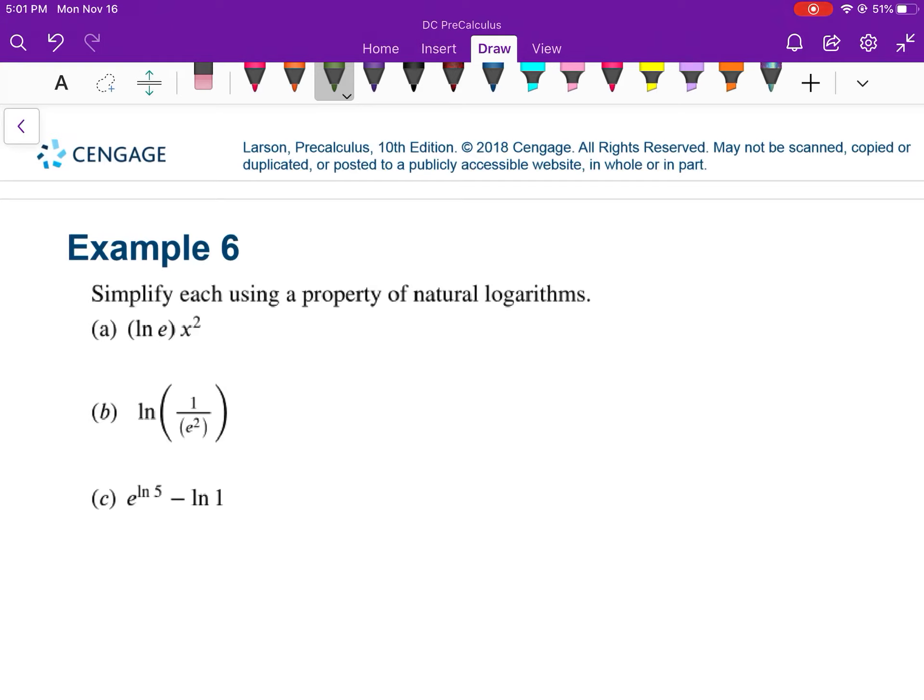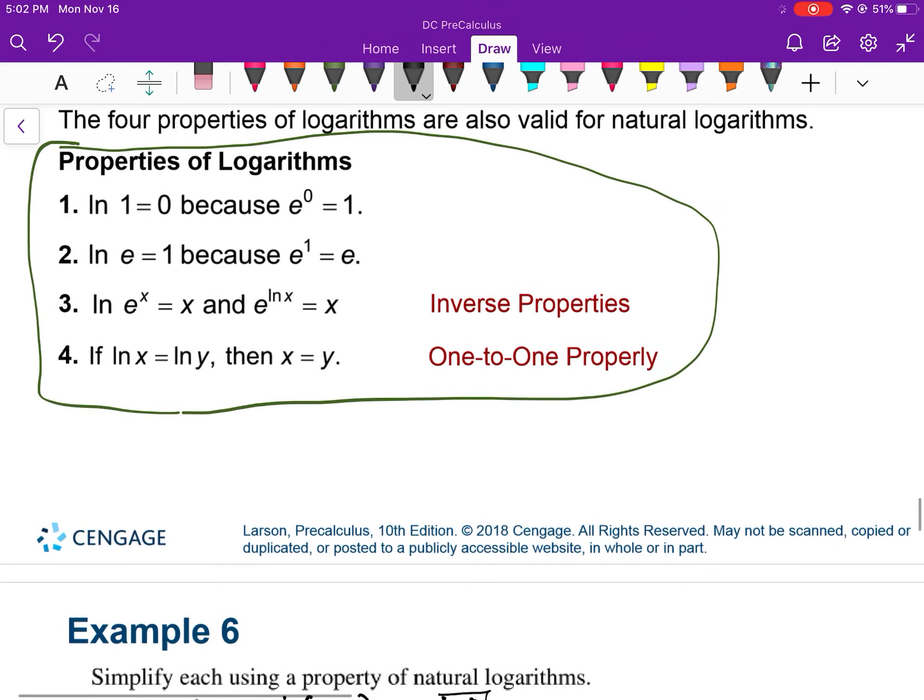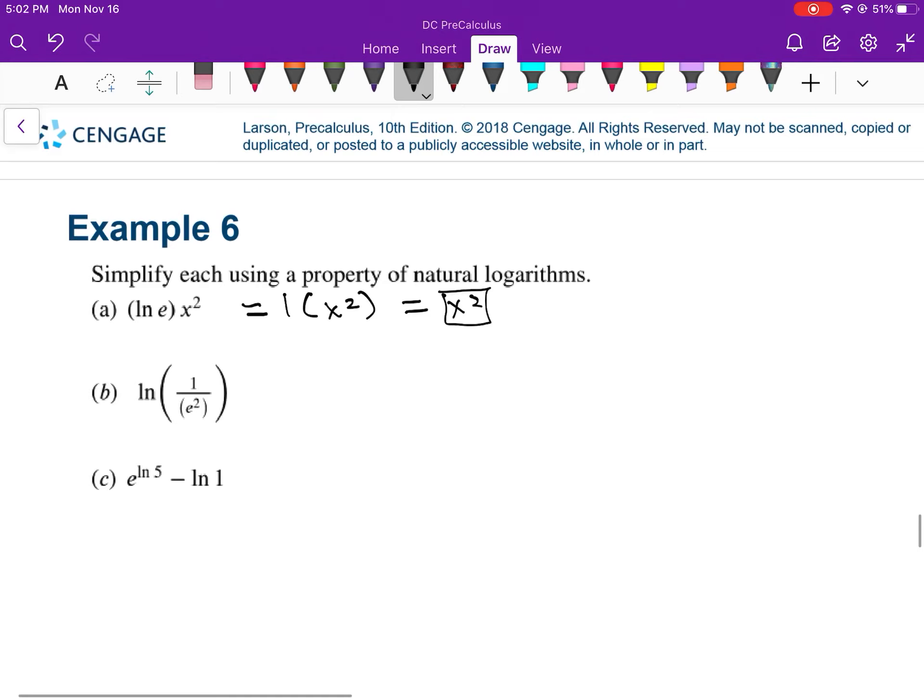First of all, the ln of e is 1. So I would have 1 times x squared, so that's just x squared. And again, that's because the natural log of e is 1. That's property 2. You don't have to know these properties by number, you just have to know how to use them.